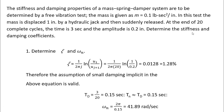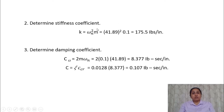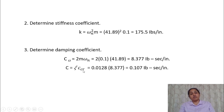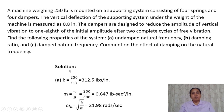To find stiffness: k = ωn²·m. Knowing ωn and mass, we can calculate stiffness. The critical damping coefficient cc = 2m·ωn. The damping ratio ζ = c/cc, so the damping coefficient c = ζ·cc. Having already calculated ζ = 0.0128 and cc, we can find the damping coefficient c.